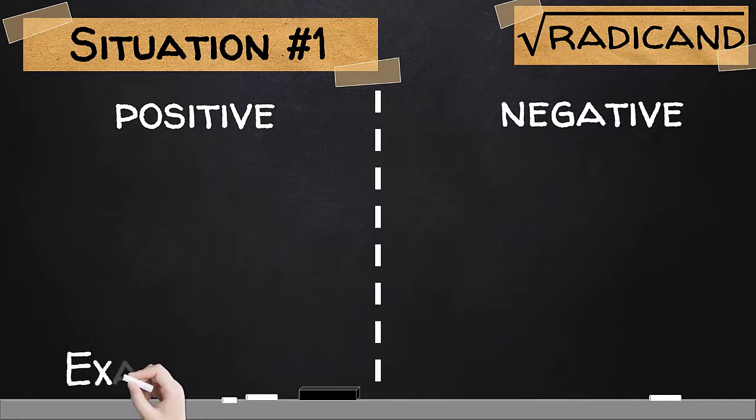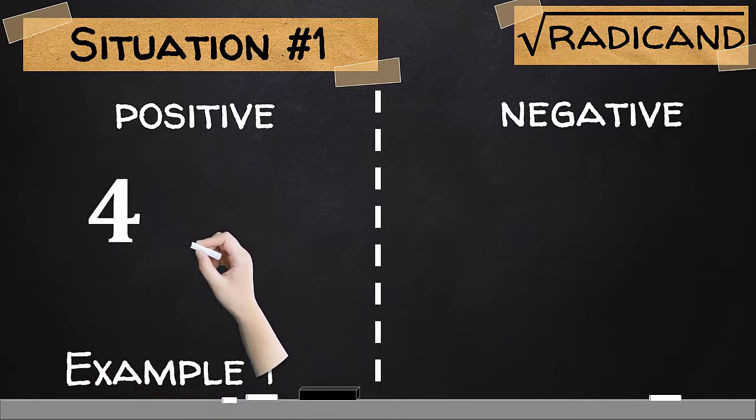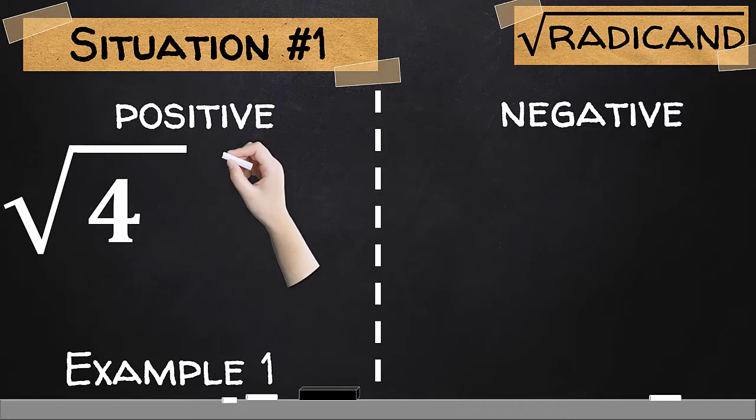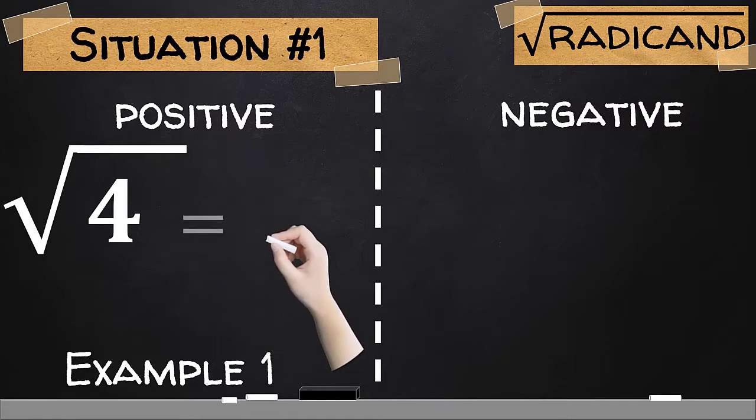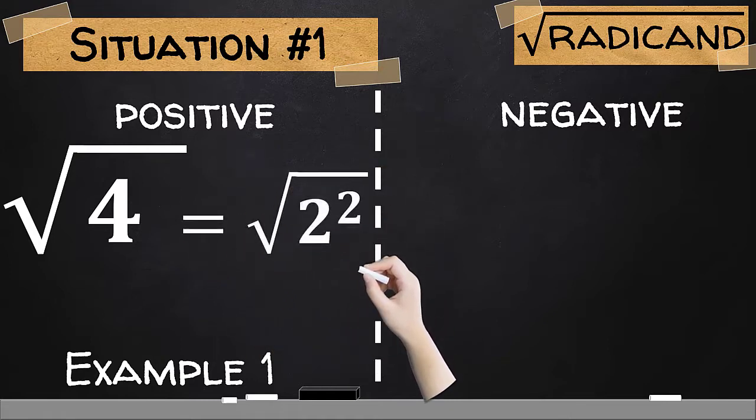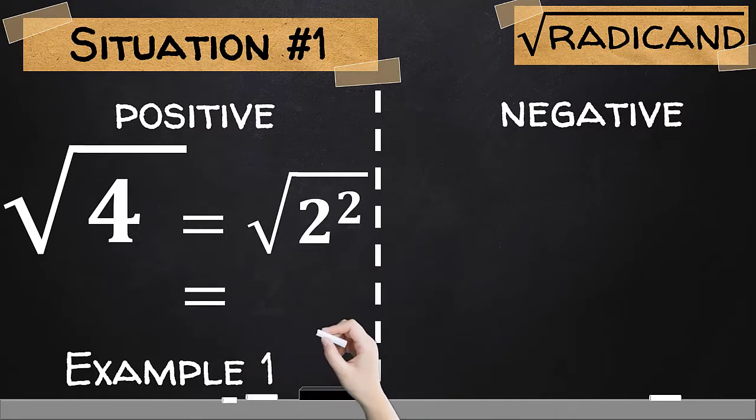For example number 1, where we choose a radicand that is positive, let's try 4. To get the principal square root of 4, we could simply add the square root symbol for this expression. Now, 4 is a perfect square and thus can be expressed as square root of 2 squared. Simplifying, we will have a value which is 2.